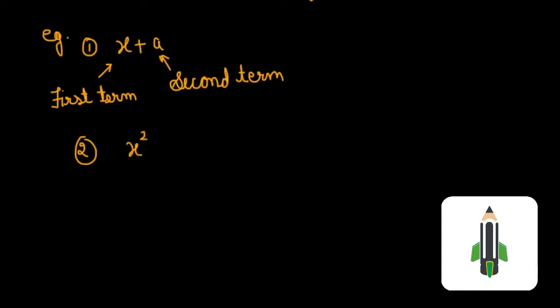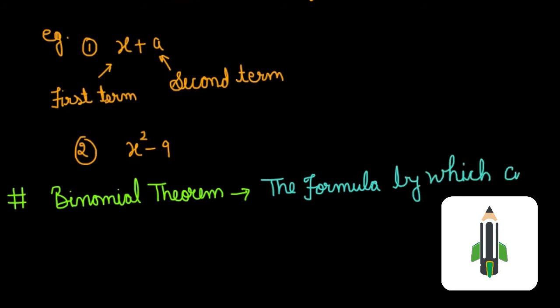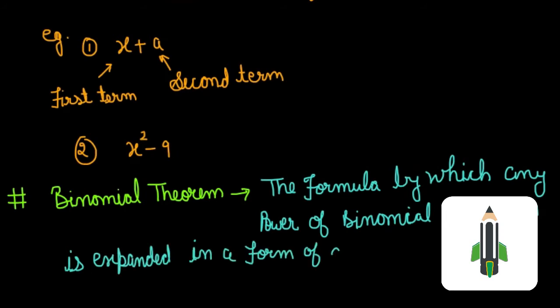Here, x squared is the first term and 9 is the second term. Now, Binomial Theorem: the formula by which any power of a binomial expression is expanded in the form of a series. This is the main formula of Binomial Theorem.